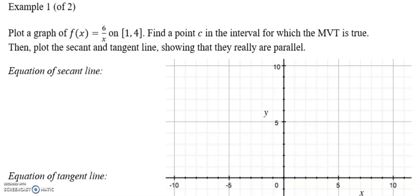Plot a graph of f(x) equals 6 over x on the closed interval from 1 to 4. Find a point c in the interval for which the MVT is true, then plot the secant and tangent lines. I'm going to block this off for a second. All right, so plotting the graph of 6 over x. We can use our calculator to do this, or you can just sub in 1 and you get 6. You can substitute in 4 and you get 1.5. And then because of the vertical asymptote at 0, we end up with this type of graph. But because we're only looking from 1 to 4, I'm going to focus just on that closed interval. So there's my graph.